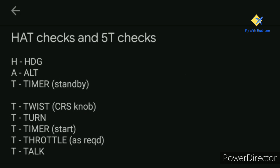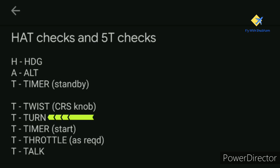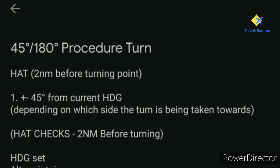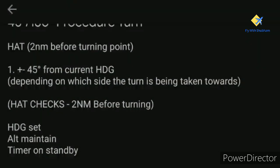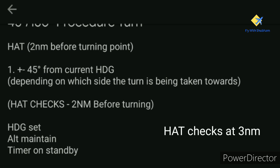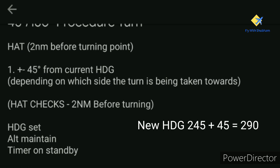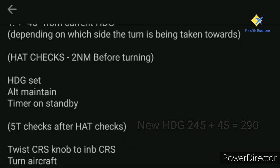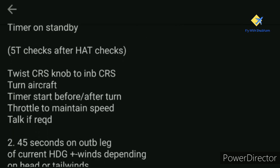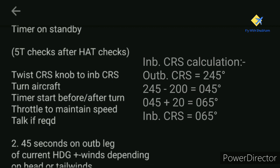This can be followed by the 5T checks. The first T is Twist, where you change your course to the inbound course. The next T can be Timer or Turn depending on your procedure. So for heading 245 outbound, the inbound course will be 065, calculated as 245 minus 200 plus 20.